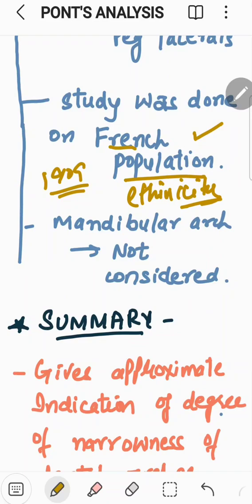And lastly, in this case, only the maxillary arch was considered. What about the mandibular arch? Mandibular arch was not included into it. So, if we need to calculate the transverse discrepancy or if we need to know if the mandibular arch do need an expansion, what should be the criteria? So, that was not calculated.